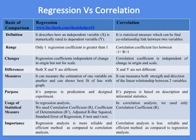In regression, both x and y can change, while in correlation, both x and y are not treated differently. Regression measures the estimation of one variable on another and can show the best fit of a line with a graph, while correlation measures both the strength and direction of the linear relationship between two variables.